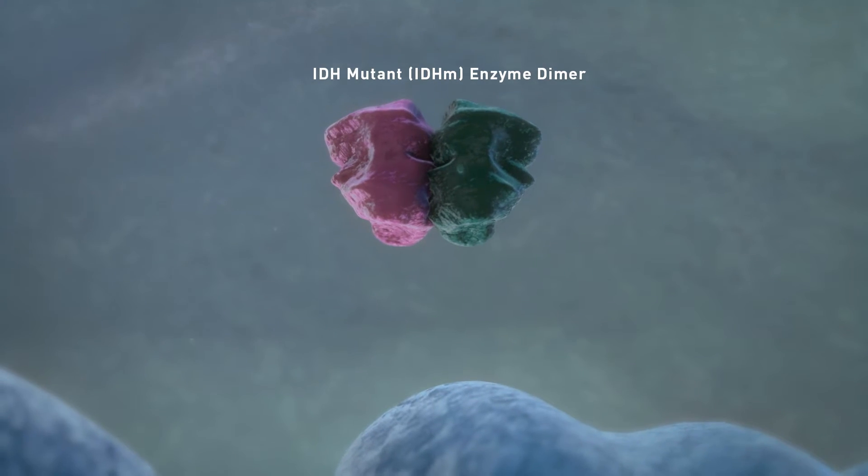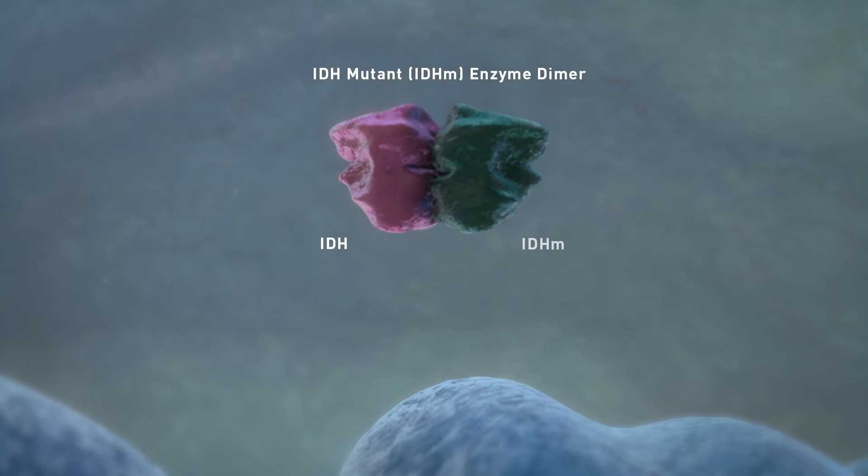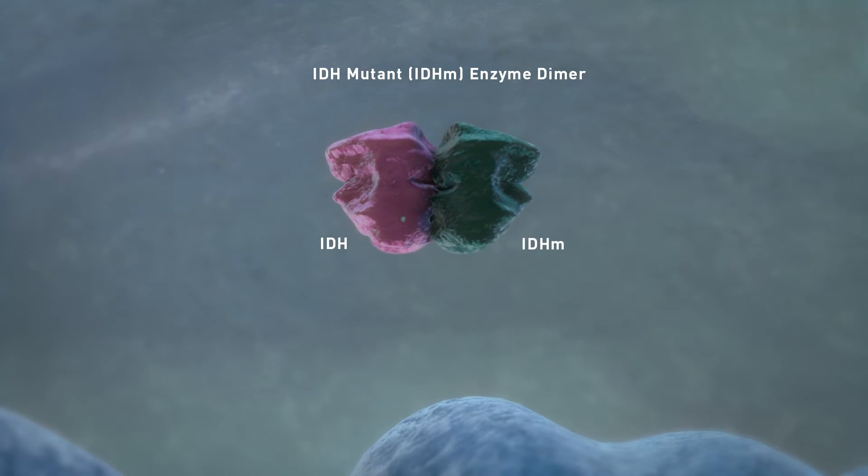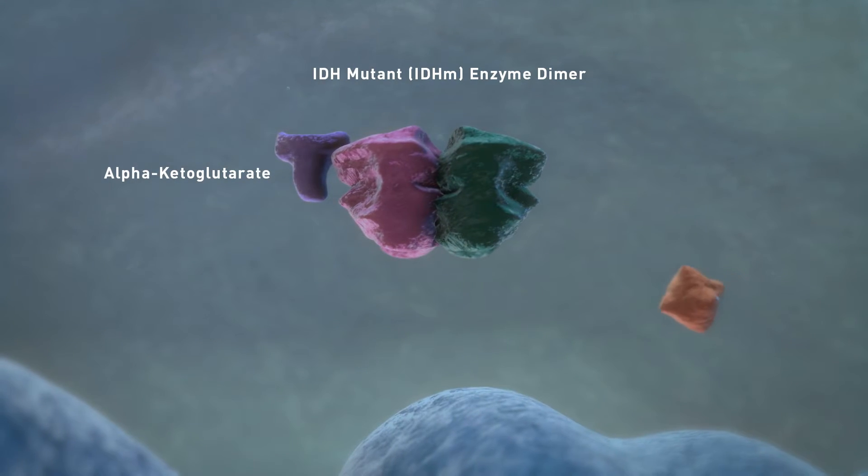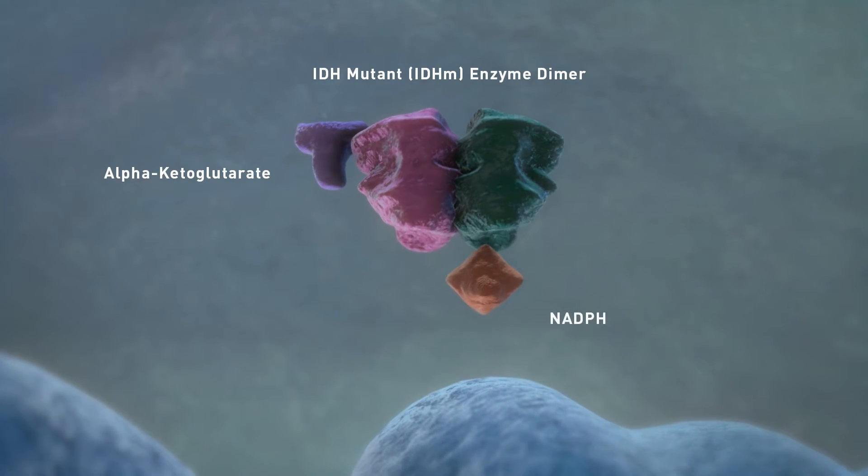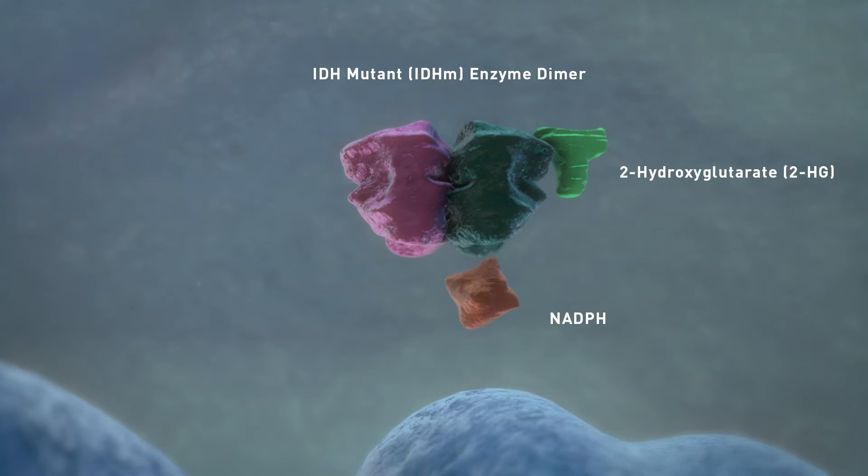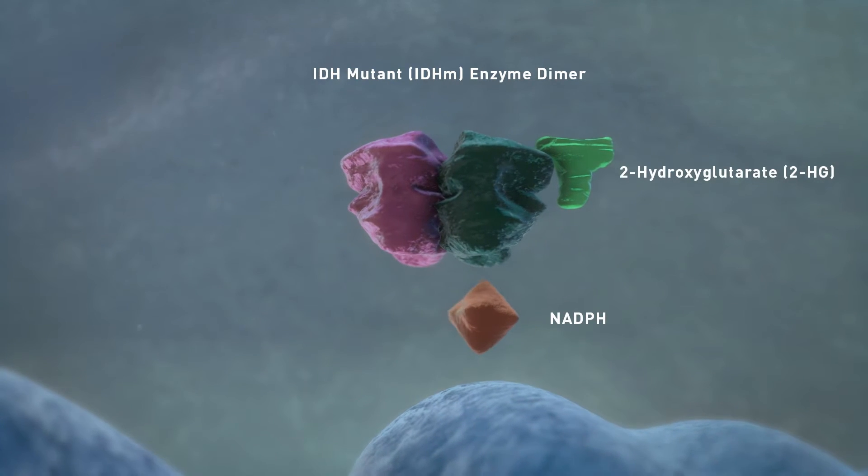The IDH mutant enzyme dimer has a normal and a mutated copy. The normal copy generates alpha-ketoglutarate. However, the mutated copy takes alpha-ketoglutarate and converts it to the oncometabolite, 2-hydroxyglutarate or 2-HG.